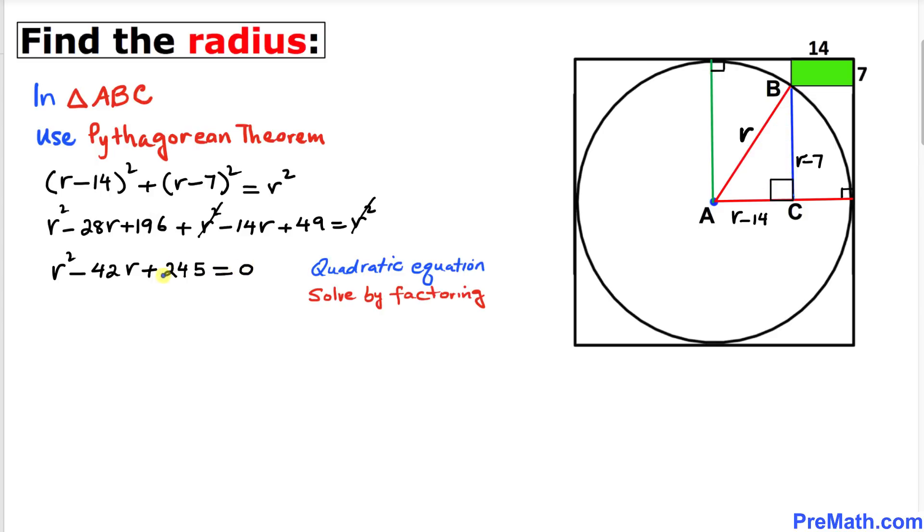Here we got this quadratic equation. Let's solve by factoring. We can see that 245 could be factored into 7 times 35. Therefore our factors are going to be (r minus 7) times (r minus 35) equals 0.